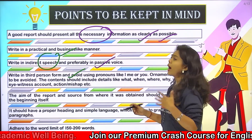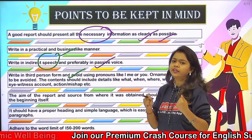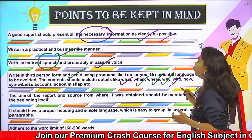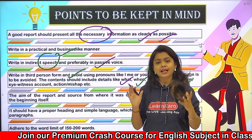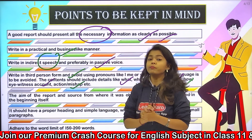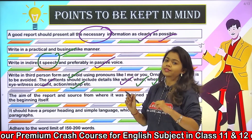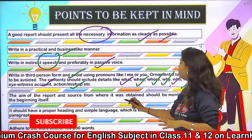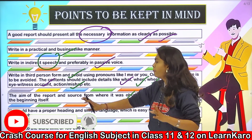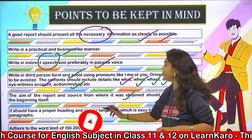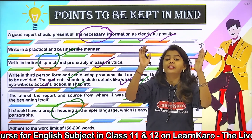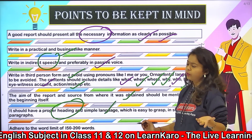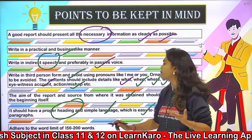The content should include — jab aap report likhti ho toh aapne aapko in questions ka answer find out karne ki koshish karni chahiye: what, when, where, why, who, how, koi eyewitness account agar present hai, ya phir action taken at the mishap site et cetera. In saare questions ke answers aapki report mein included definitely hone chahiye. The aim of the report and source from where it was obtained should be mentioned clearly in the beginning itself. It should have a proper heading — sabse important part hota hai aapka report ki heading, jisse aapko pata chalta hai ki entire report kis cheez ke baare mein likhi gayi hai.